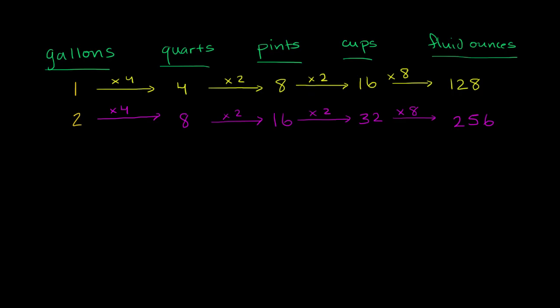Notice something here. When we went from one gallon to two gallons, we essentially multiplied by two. And you see that across the board: four quarts to eight quarts, eight pints to 16 pints, 16 cups to 32 cups, 128 fluid ounces to 256. Essentially, when you increase the volume in gallons by a factor of two, you're of course going to increase the volume in any unit by a factor of two.